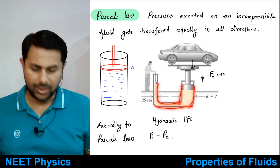That force is known as the buoyant force. It is the upthrust exerted by a fluid on an object which is immersed in the fluid, and it is equal to the weight of the fluid that got displaced. F_B equals weight of liquid displaced, which equals m times g. Mass equals density times volume, so buoyant force equals rho times V times g, where V is the volume of the liquid displaced.